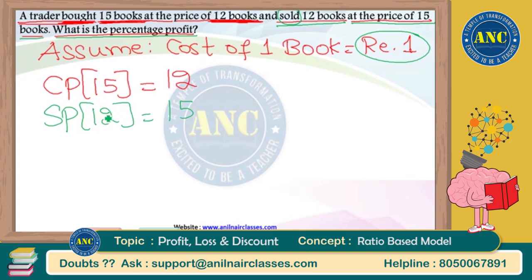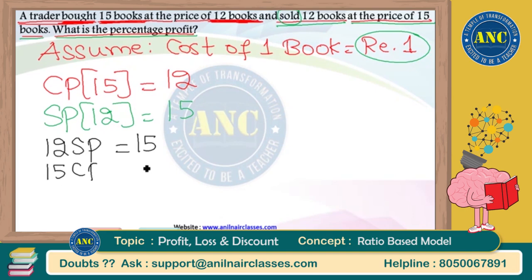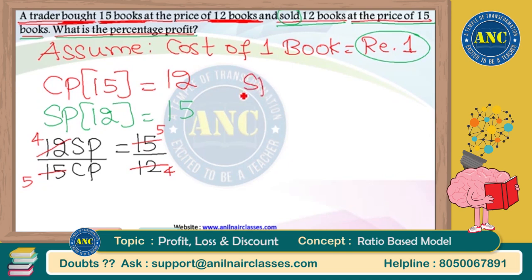Express it as SP by CP. The second equation is: 12 SP = 15. The first equation is: 15 CP = 12. Divide one by the other — it becomes SP by CP. Simplifying: 3 × 5 over 3 × 4, cross multiply — 5 × 5 = 25, and 4 × 4 = 16. So SP by CP = 25 by 16.